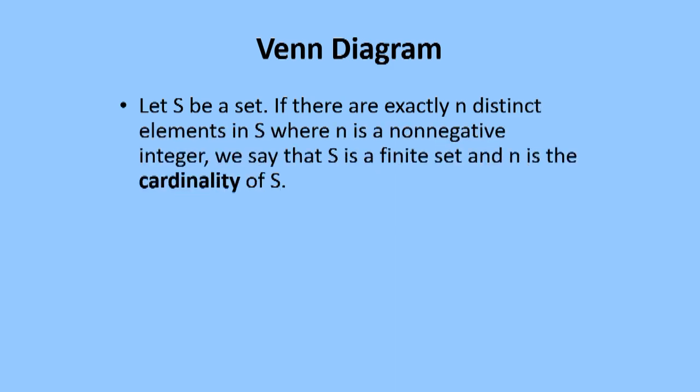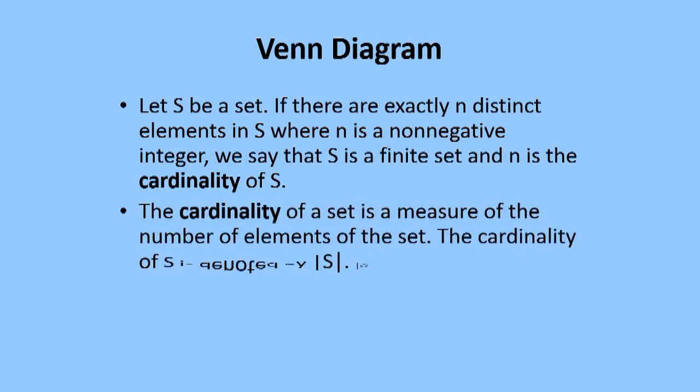Let S be a set. If there are exactly N distinct elements in S where N is a non-negative integer, we say that S is a finite set and N is the cardinality of S. The cardinality of a set is a measure of the number of elements of the set. A cardinality of S is denoted by this symbol. A set is said to be infinite if it is not finite.